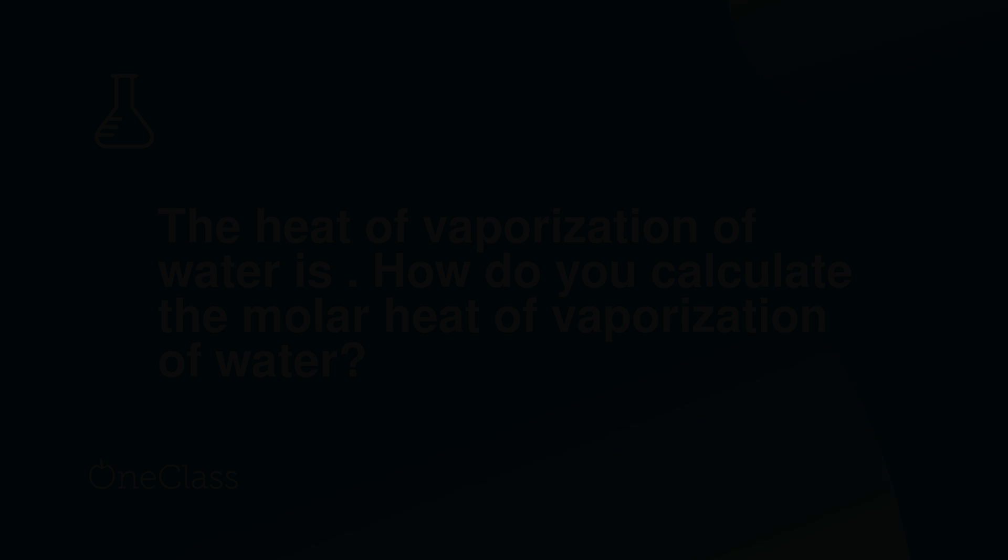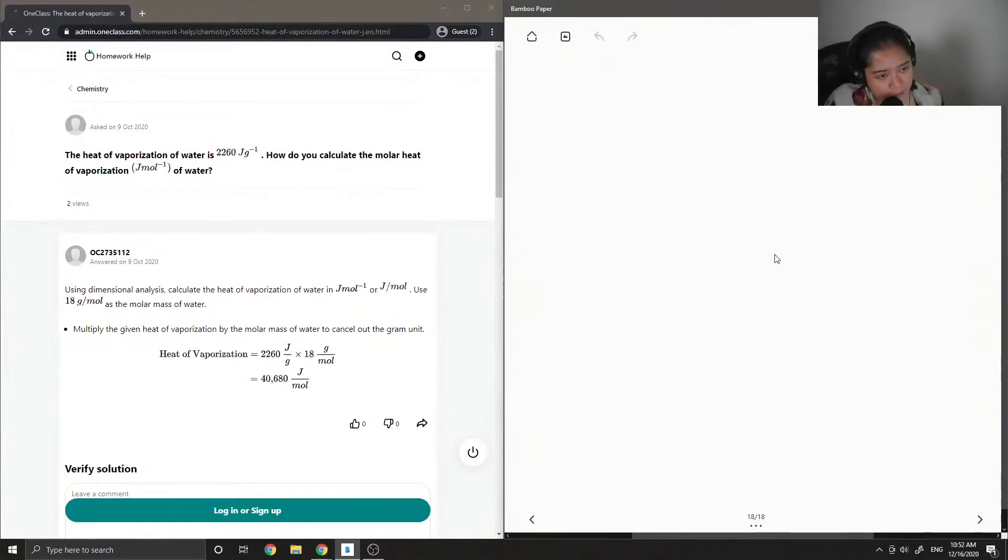Okay, so question seven: the heat of vaporization of water is 2260 joules per gram. How do you calculate the molar heat of vaporization of water? So this question looks like it would be hard, but it's actually not too difficult. Molar heat of vaporization of H2O.